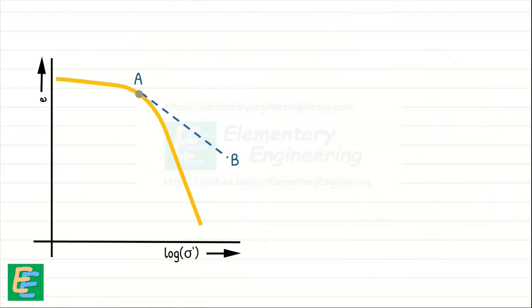At point A, we draw a horizontal line AC. This way we obtain an angle between these two lines. Now, we bisect this angle by drawing an angle bisector AD.